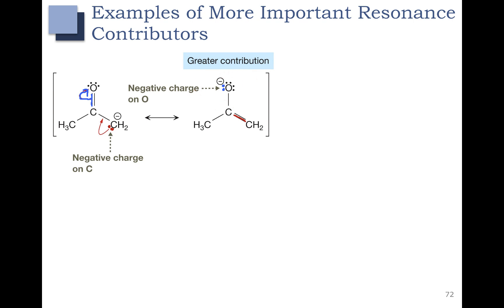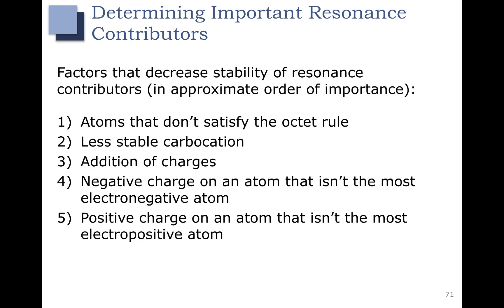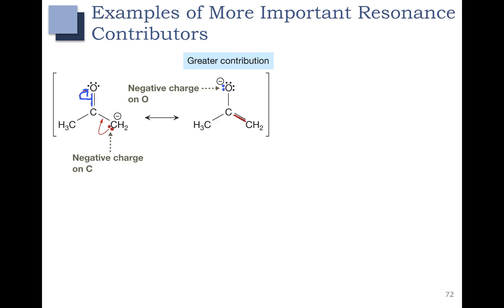So these are our two resonance structures and if we're comparing these, we have to go through the list. We don't have any atoms that don't satisfy the octet rule, and we don't have any carbocations or addition of charges, so we can ignore rules one, two, and three. Looking at rule four: we have a negative charge on carbon and a negative charge on oxygen. The negative charge on the oxygen is going to be the greater contributor because we like having negative charges on more electronegative atoms.